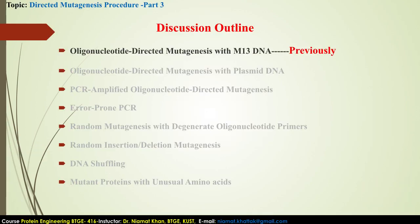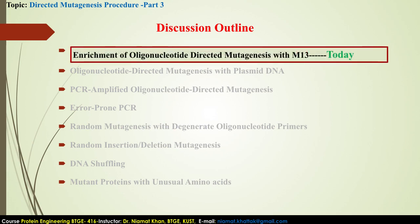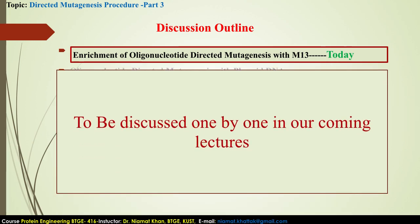These are different procedures of directed mutagenesis. These methods are applied in protein engineering to achieve desired characteristics in a protein. Previously we studied oligonucleotide-directed mutagenesis with M13 DNA as a template, and today we will study how to enrich the desired mutation-containing strand to achieve approximately 100% modified strand with desired mutation compared to wild type strand. The rest of the procedure will be discussed in coming lectures.